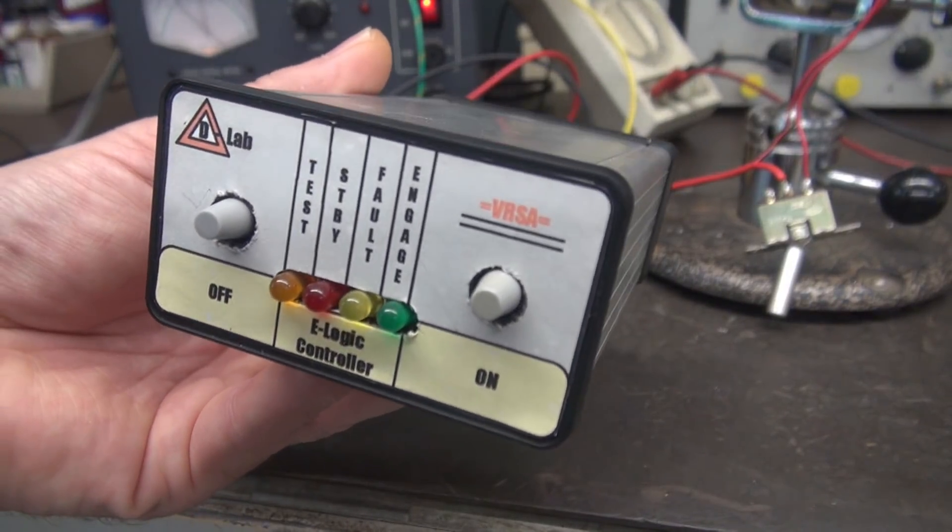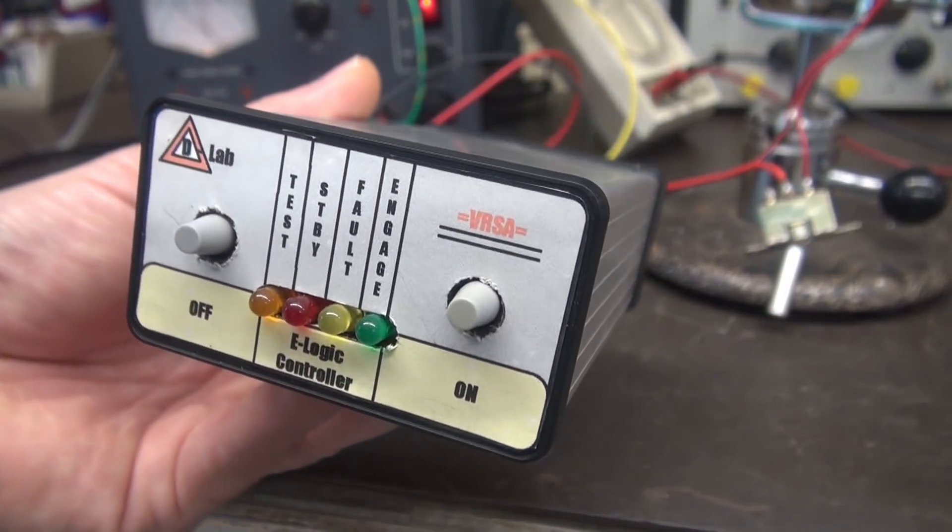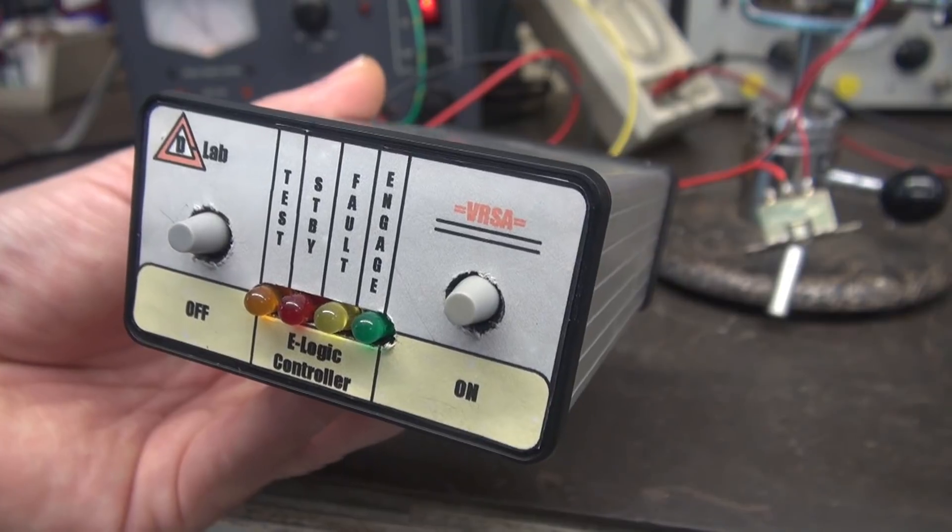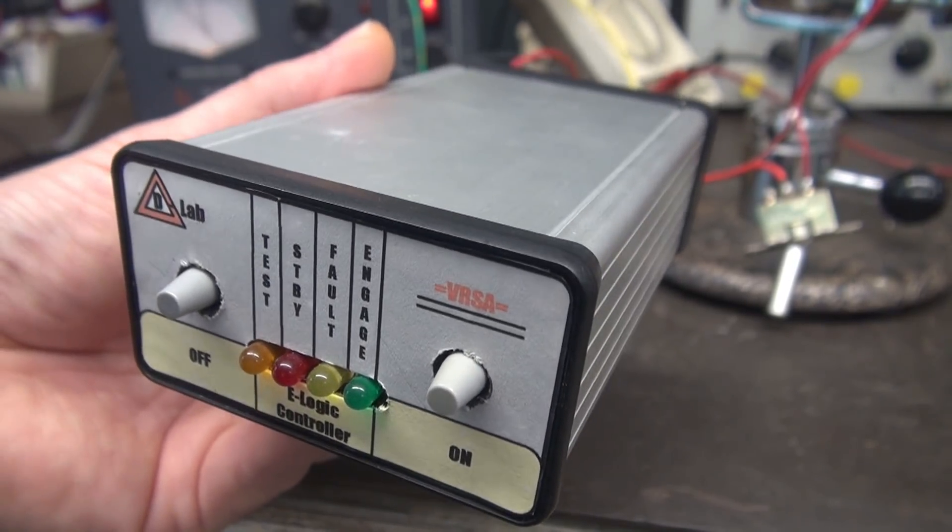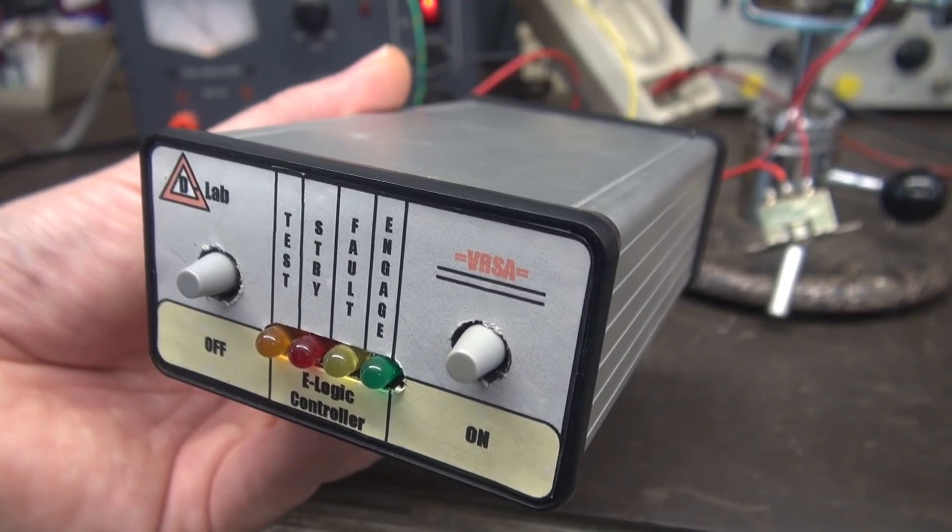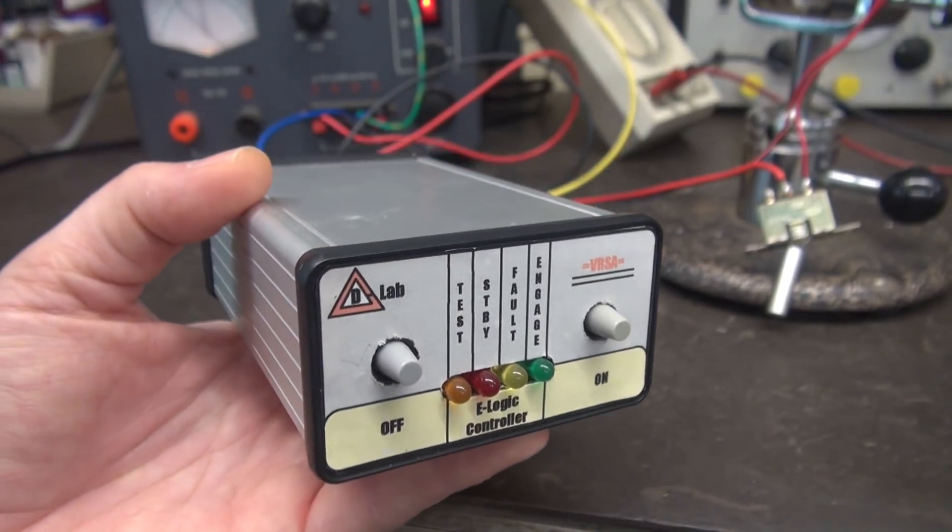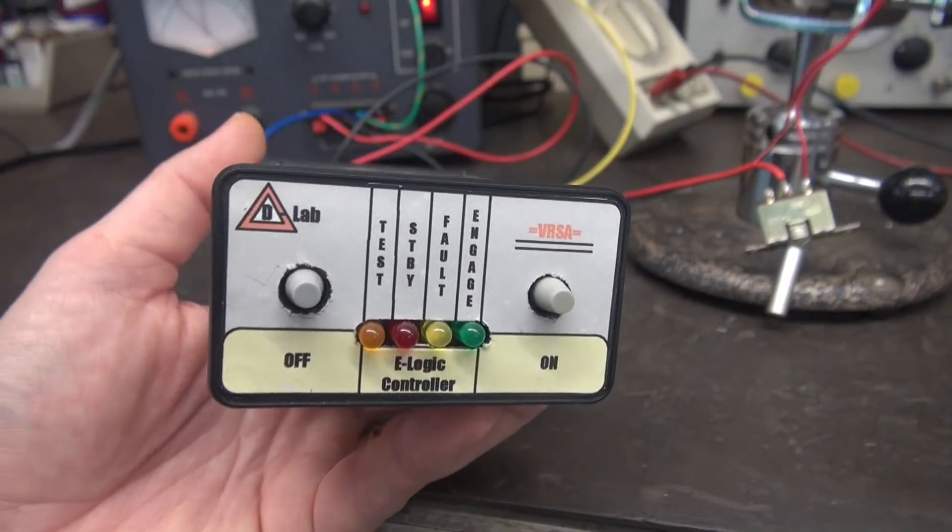So here's Versa. It is a simple logic controller that can be added to any machine that is in need of a brain. This is the prototype module. You can see it fits right in the palm of my hand.